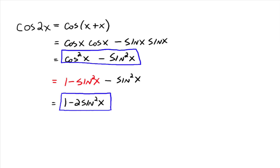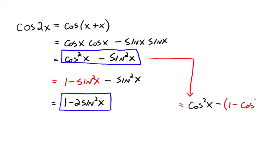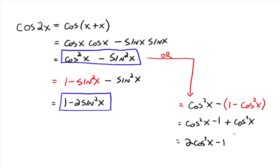There's one more form. We rewrote cosine squared as 1 minus sine squared; we could just as easily rewrite sine squared as 1 minus cosine squared. With parentheses, that gives us cosine squared x minus (1 minus cosine squared x), which goes to cosine squared x minus 1 plus cosine squared x, equaling 2 cosine squared x minus 1. So that's a third identity that cosine of 2x could be written as.